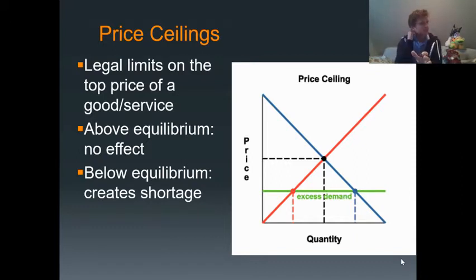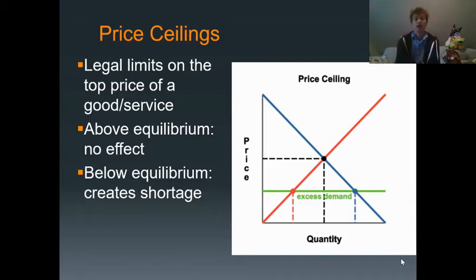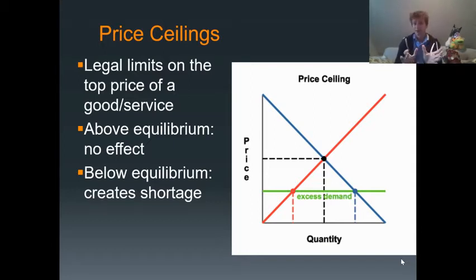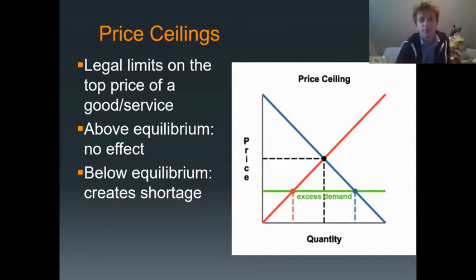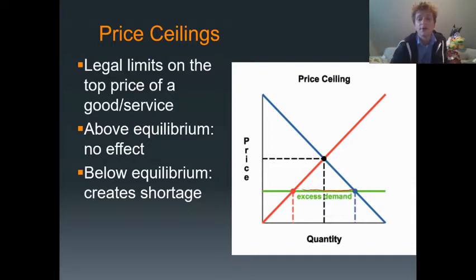A price ceiling is exactly what it sounds like — it's a legal limit on the top price you can charge for a good or service. You can't go above that price, that's why it's called a ceiling. Now even though it's a ceiling, when you look at it visually it will be below equilibrium, because if it's below equilibrium the market can't get up to equilibrium since that's where it wants to go.